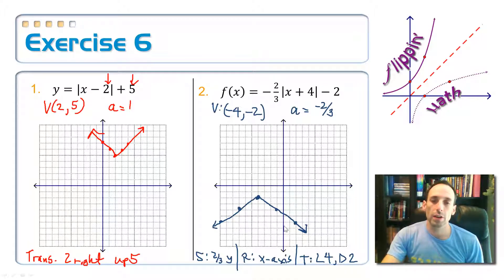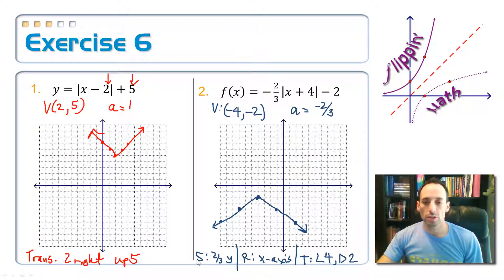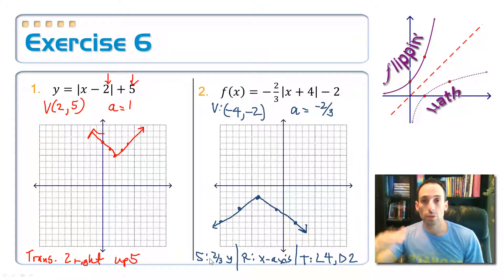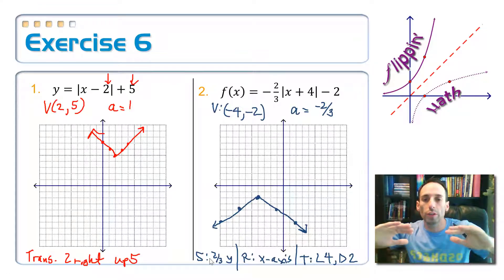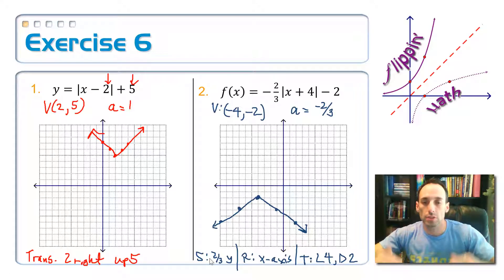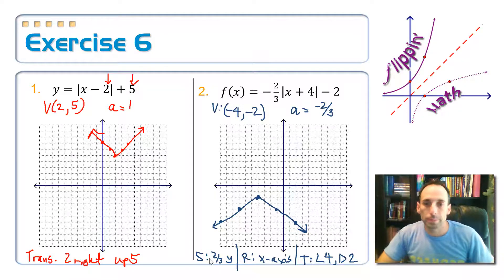To compare it to the parent function, that's what I have right down here. Notice I have an S, an R, and a T. And that's what we're going to do in the next video here. S, R, T transformation. Scaling, reflecting, and translating it. I am scaling all of the Y values by 2 thirds. This is a vertical shrink. I'm also reflecting the parent function across the X axis, because it's pointing downwards instead of pointing upwards. And then finally, I am translating every single point to the left 4 and down 3.